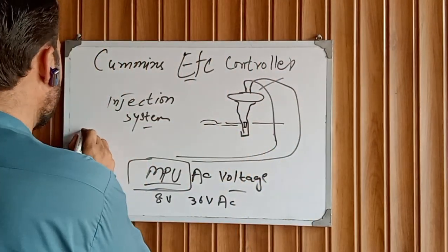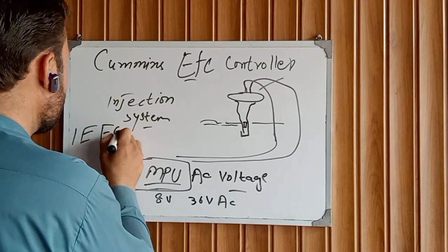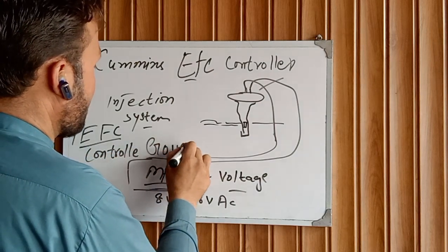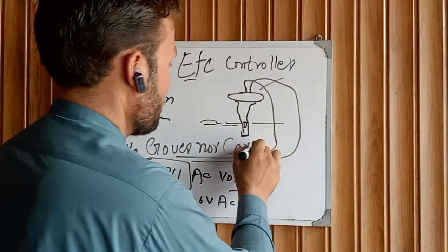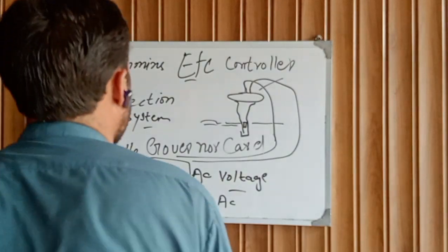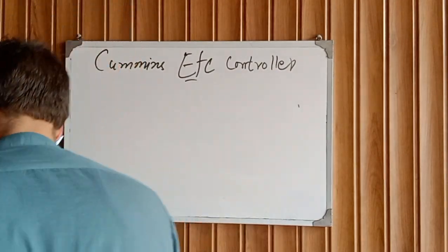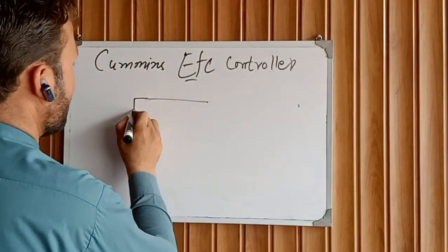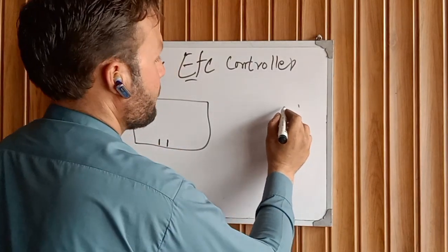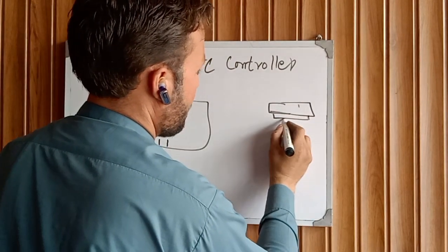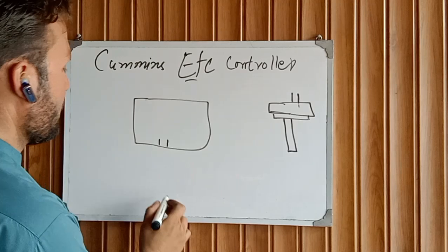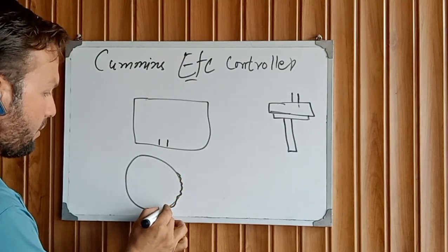This is the EFC controller governor card. You can see the picture of the governor card. This governor card is working. For example, this is our governor card. These two points are for the MPU. This is our actuator, the actuator two-wire.